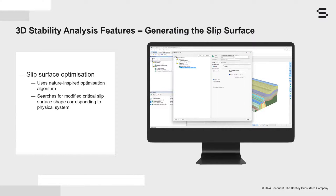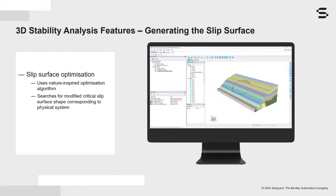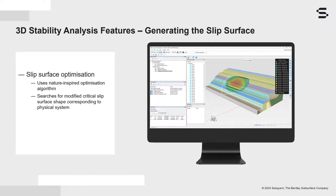Slip surface optimization has been added to Slope3D, providing the functionality to search for a modified slip surface shape that produces a lower factor of safety. The Slope3D methodology uses a nature-inspired optimization algorithm to quickly generate a slip surface that honors the controlling characteristics of the slope, thus ensuring that the results correspond to the physical reality.